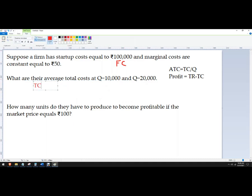So that was total cost equals 100,000 plus 50 rupees times 10,000, and that gives us a rupee total cost of 600,000.